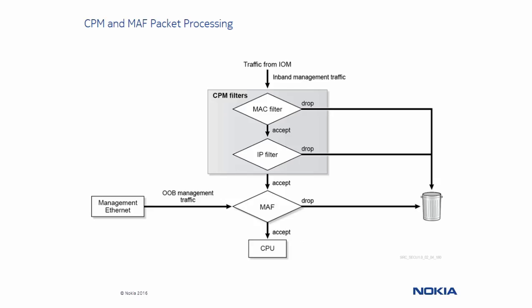Let's take a look at how packets received from in-band traffic and out-of-band traffic are managed by the Control Plane Management Filter and the Management Access Filter. Packets that are received in-band and routed to the CPM are processed by the CPM filters first: the MAF filter, and then the IP filter which is either IPv4 or IPv6, with a final check at the MAF. Traffic arriving at the management Ethernet interface from the out-of-band network is only processed by the MAF. If packets from both the MAF and the CPM are accepted, the packet is sent to the CPU to be processed.